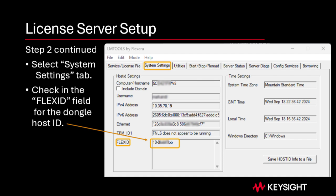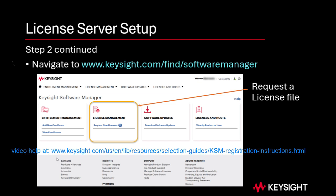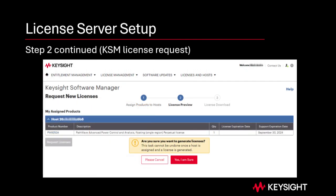If this is a USB dongle license, in LMTools select the System Settings tab and check the Flex ID field. Or you can read the dongle ID as printed on the physical key itself. Next, go to keysight.com/find/softwaremanager to receive your license file. If you haven't used Keysight Software Manager (KSM) before, you may need to create an account. Follow the instructions on screen to enter your order number, certificate number, and host ID to request a license file.